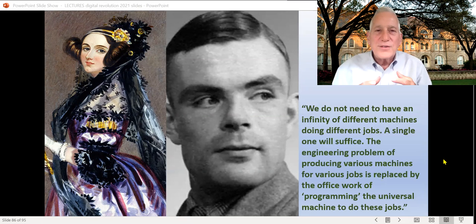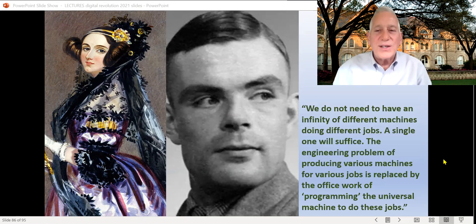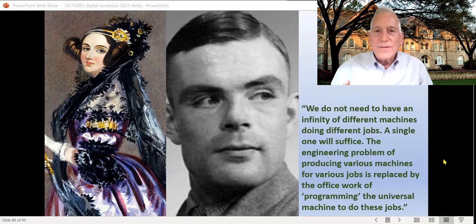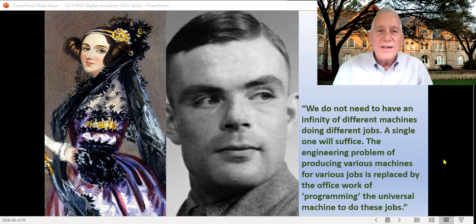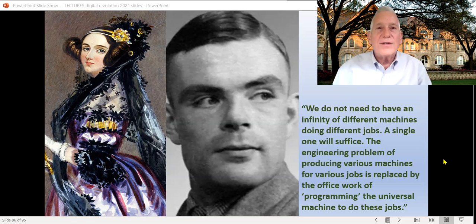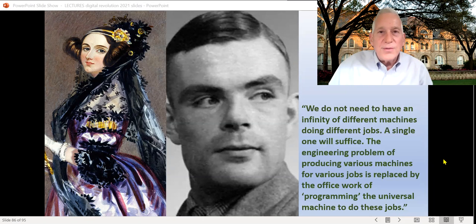That idea gets expressed a hundred years later in the 1930s by Alan Turing, who says we don't need to have an infinity of different machines doing different jobs — a machine to break the code, a machine to do missile trajectories, a machine to calculate explosions. A single machine will suffice, he said. That was the idea in his mind of the universal computing machine that he wrote about: the engineering problem of producing various machines for various jobs is replaced by the office work of programming the universal machine to do these jobs.